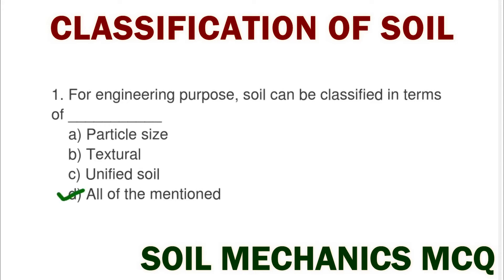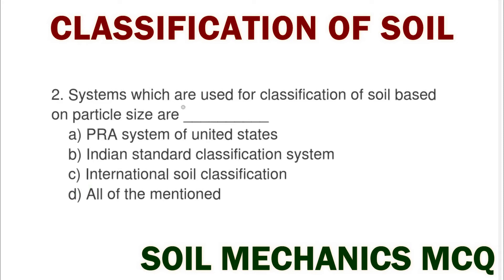The correct answer is option D all of the above. Next question: the systems which are used for soil classification based on particle size — option A PIA system of the United States, option B Indian standard classification system, option C international soil classification system, option D all of mentioned.